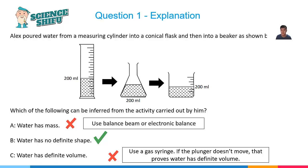Sentence C is not relevant or is wrong because to determine if the object has a fixed volume, we need to use a gas syringe and we need to push the plunger. If the plunger does not move, that means it has a definite volume. However,